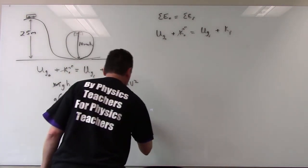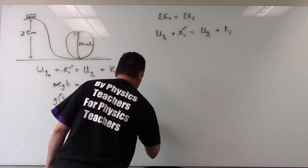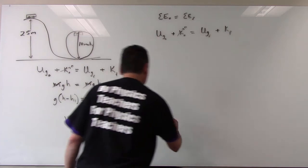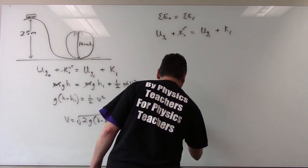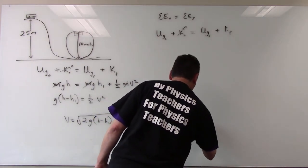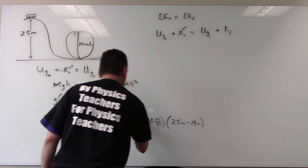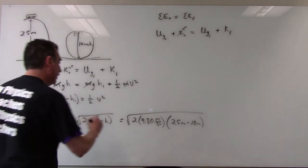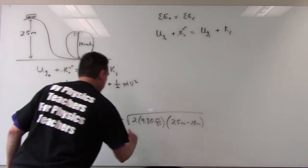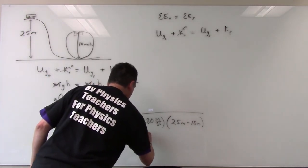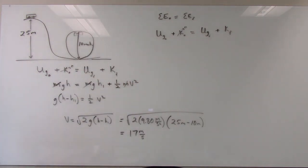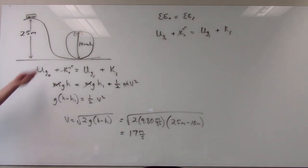Let's put our values 2 times 9.80 meters per second 25 meters minus 10 meters and the square root. Let's see what we get. Punch it into your calculator you should get 17 meters per second. Now let's see if this is fast enough to keep it from falling.